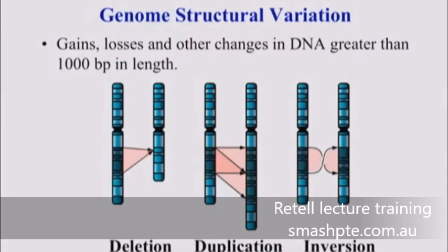Shown here are different human chromosomes — four from African and four from non-African populations, though the distinctions aren't that important. What I'm showing you is the presence of insertions, deletions, and inversions shown as blue, red, and green. Each line represents a different human genome that has been analyzed, looking for structural variation of events greater than 5,000 base pairs in size.